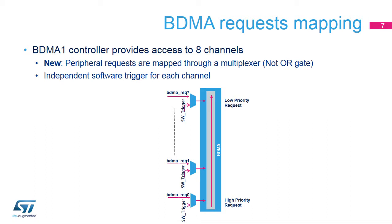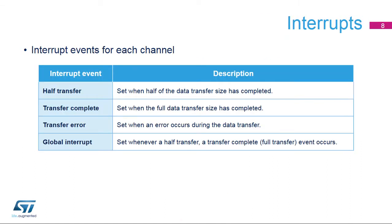BDMA peripheral requests are connected to the DMA MUX2 request router. It enables a flexible request mapping for each channel. Each BDMA channel is designed with a group of interrupt events.